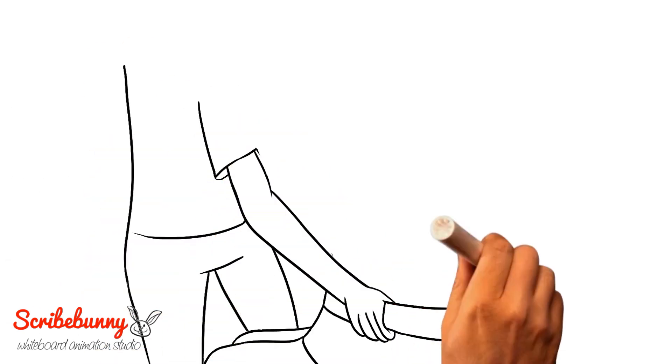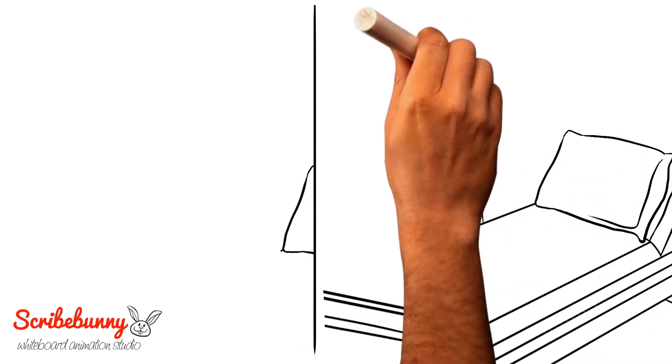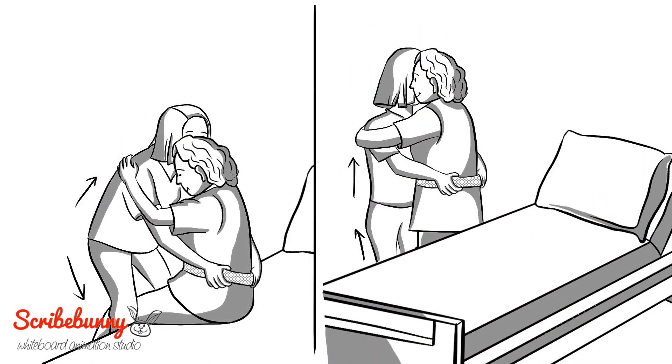Slide two fingers between the belt and the person's body while lifting with a firm grasp on the gait belt. Bend your knees, keep your back straight while keeping the other hand on the person's back, and as you lift, straighten your knees.